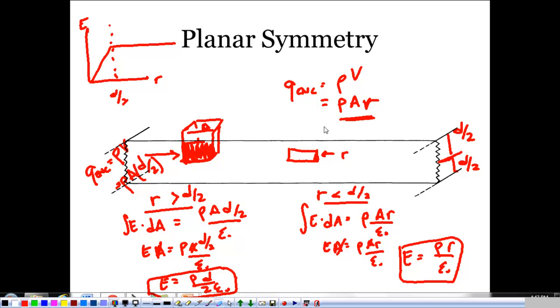So really, all we're changing with this, again, is what our Q enclosed is. If we can figure out Q enclosed, Gauss's law is going to be super, super easy.